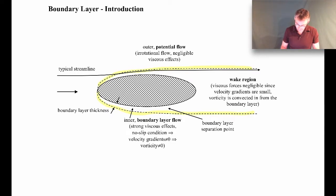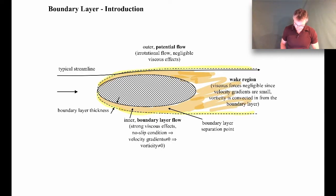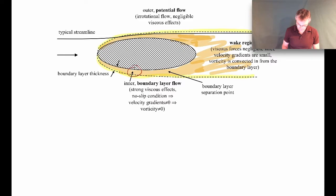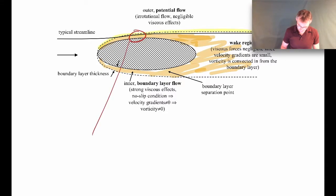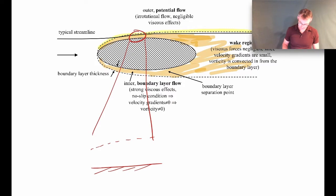Essentially all of the viscous effects occur inside this dashed line — the boundary layer region, highlighted in orange. This region has very strong viscous effects because of the no-slip boundary condition occurring at the surface. If you zoom in closely enough on the boundary, it almost looks like a flat plate, and you can see the boundary layer dashed line more clearly.